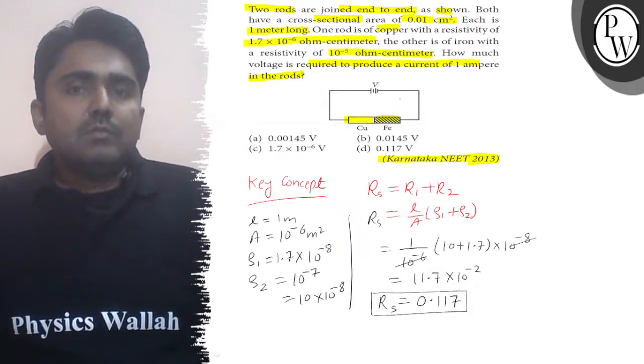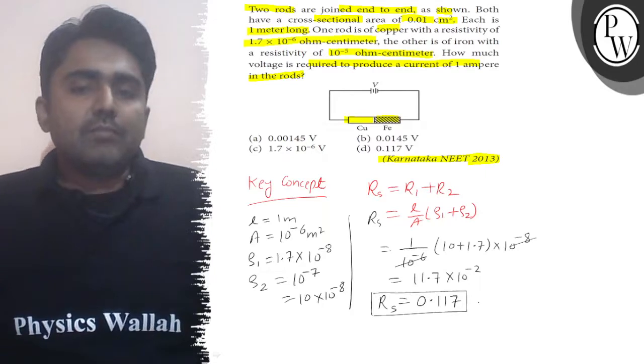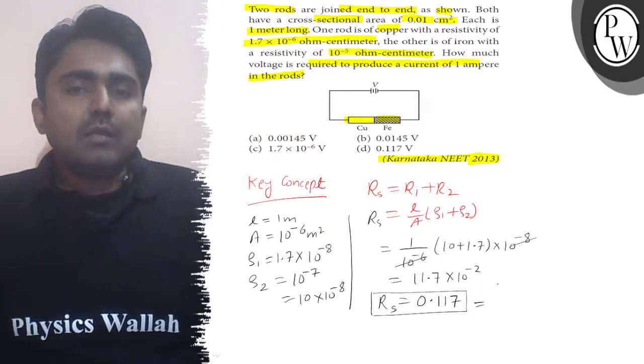Now we need to find voltage for 1 ampere current. R = V/I. Current is 1 ampere, so voltage will be equal to resistance. V will be equal to 0.117 volt.